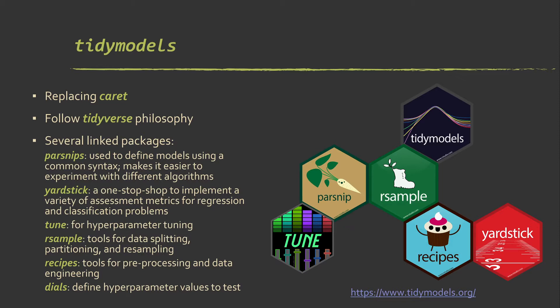R-Sample is for defining your data folds or bootstraps or your training and testing splits. Recipes is for defining preprocessing pipelines, like centering and scaling, normalizing. And then dials allows you to set up values for different tuning parameters that you want to test when you run your hyperparameter optimization. And note there are a couple other packages, too, that I'll mention later.